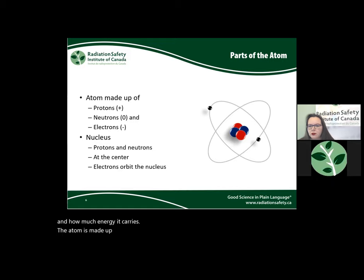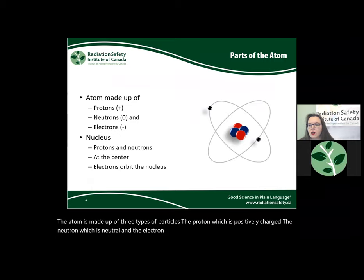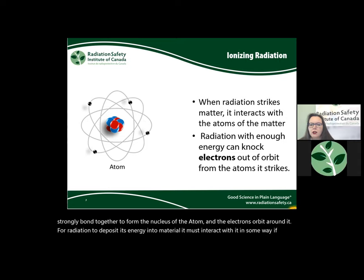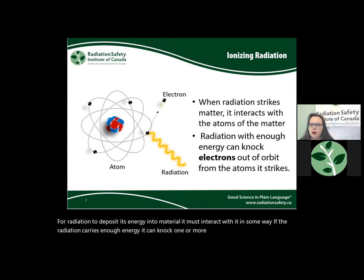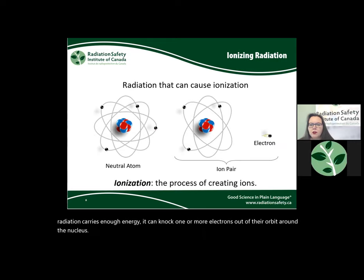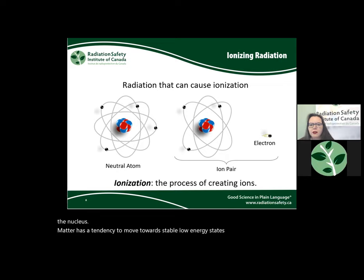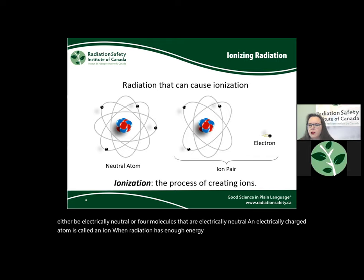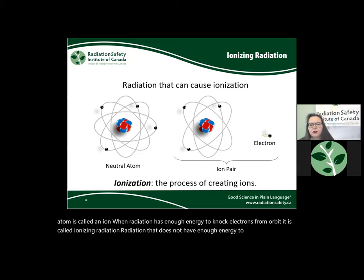The atom is made up of three types of particles: the proton, which is positively charged; the neutron, which is neutral; and the electron, which is negatively charged. Protons and neutrons bond together to form the nucleus, and electrons orbit around it. If radiation carries enough energy, it can knock one or more electrons out of their orbit — this charged atom is called an ion. Radiation with enough energy to do this is called ionizing radiation; radiation that cannot remove electrons is called non-ionizing radiation.